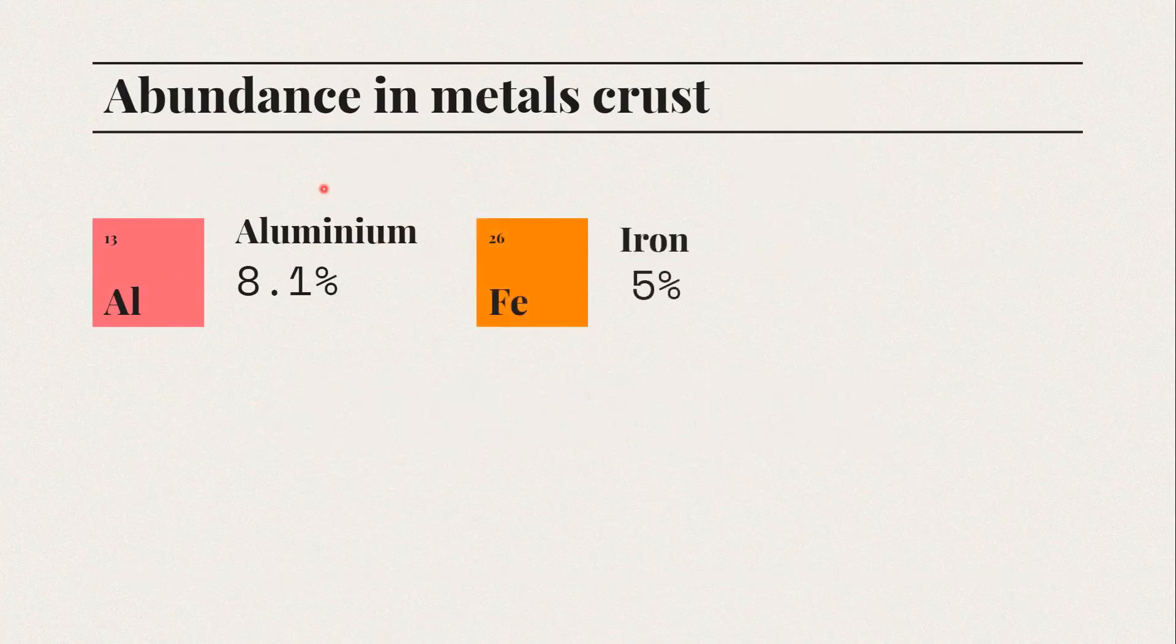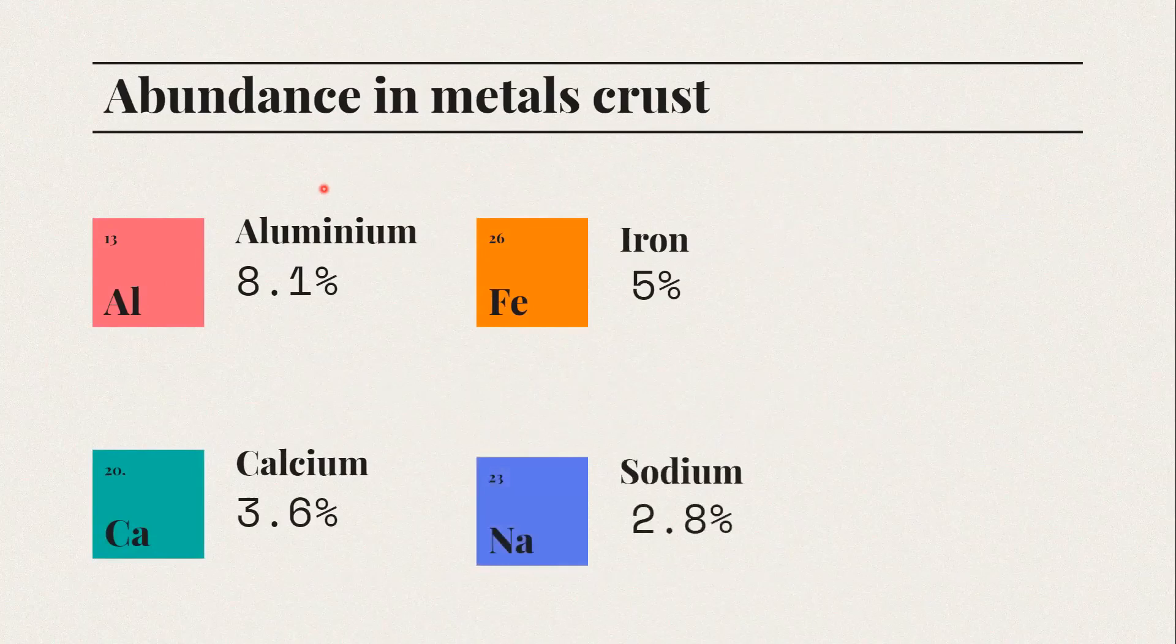Next, the abundance of metals in the earth's crust. Aluminum forms 8.1% of the crust, making it the most abundant metal. Iron follows at 5%, then calcium at 3.6%, and sodium at 2.8%. The top three abundant metals are aluminum, iron, and calcium.